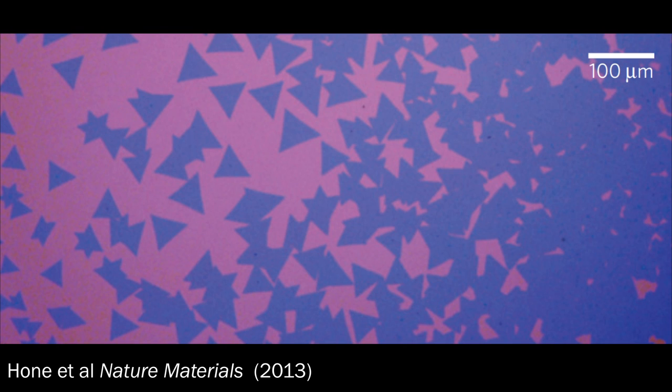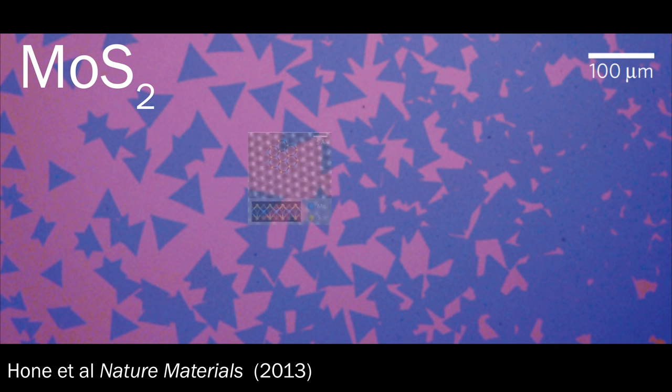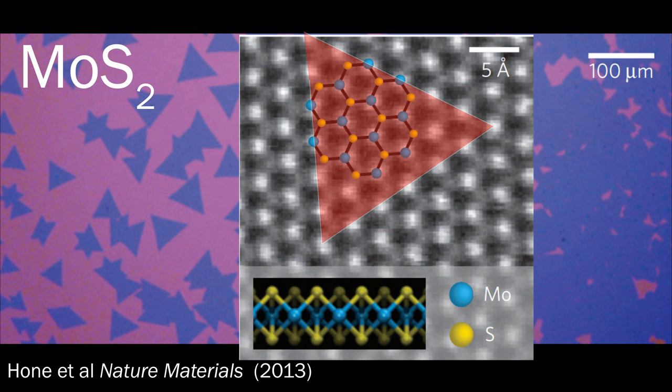This optical micrograph, taken by researchers at Columbia University, shows a top-down image of triangularly shaped MX2 nanosheets on a silicon dioxide surface. The triangular shape is a direct result of the trigonal prismatic structure of the single MX2 cell.